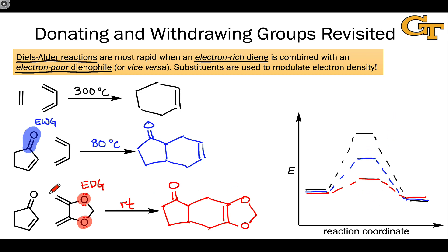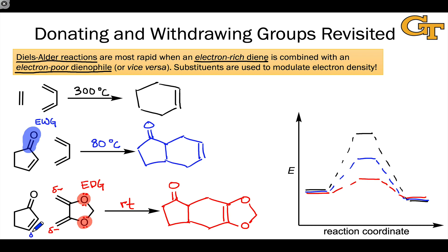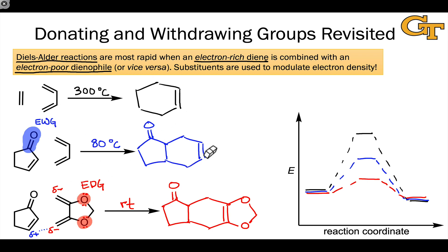The reason the activation energy goes down is that introducing these groups creates polarization that encourages the reaction to occur. For example, the inclusion of donating groups in the diene puts partial negative charge on the end carbons of the diene, and the inclusion of a withdrawing group in the dienophile makes the dienophile carbons partially positive. It's the attraction between these positive and negative charges that accelerates the step. In all three of these examples, either the diene or dienophile is symmetric, so there's no site selectivity or regiochemical issue — flipping over the diene gives the same product. On the next slide, we'll look at an example where there is a regiochemical issue.